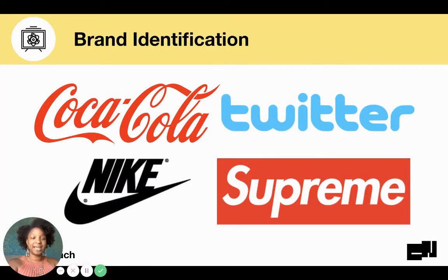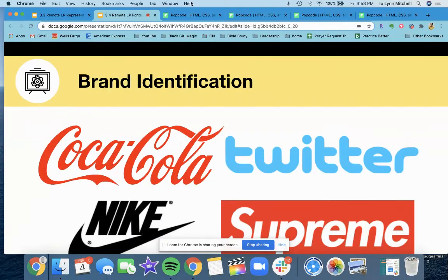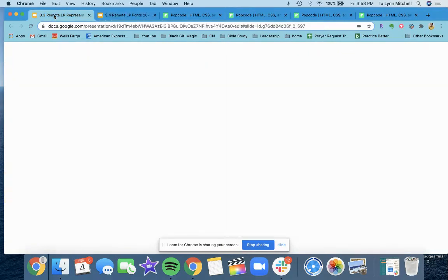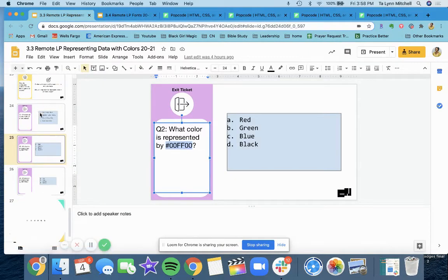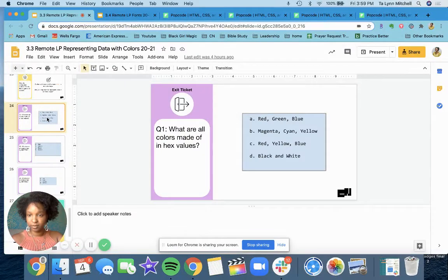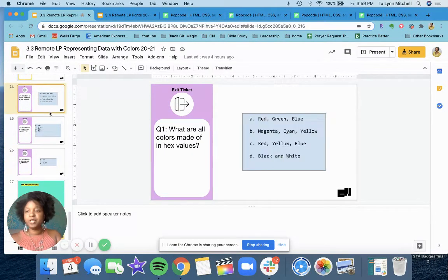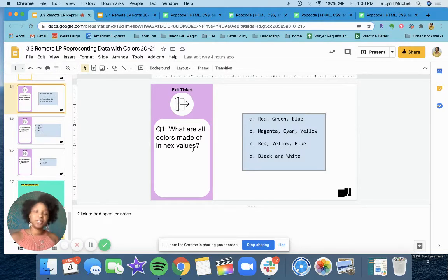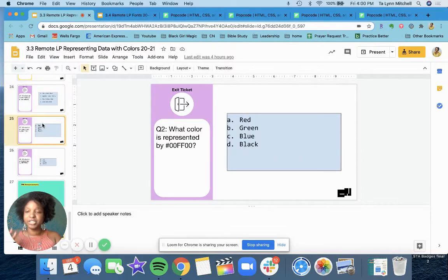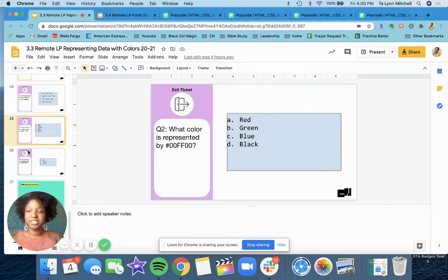So let's go over the exit ticket first. The exit ticket from last class — here were the questions. First one: what are all colors made of in hex values? If you said red, green, and blue, which is A, you got it right. Question two: what color is represented here? This color is green, which is B.